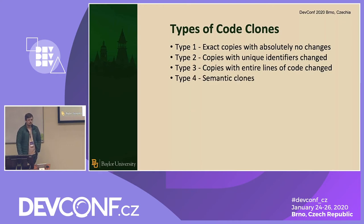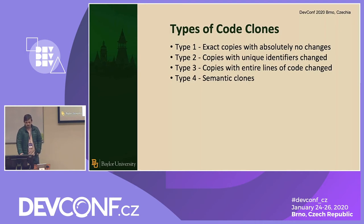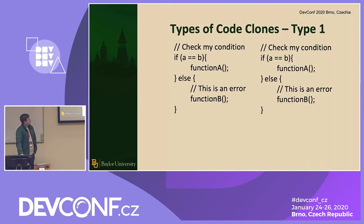Lastly is Type 4, which are semantic clones. These are quite different than the other three. Typically you'll see code clone detection tools find either Types 1 through 3 or Type 4 — I don't think there's any tool out there that finds all four. Semantic code clones are not syntactically similar, they're only semantically similar, so you're not going to be able to find them using the typical techniques you'd use for Types 1 through 3, which is why they're typically their own thing.